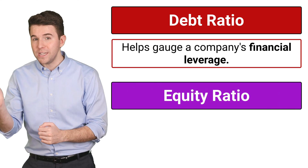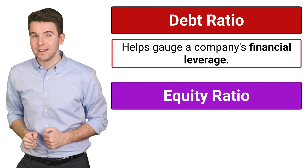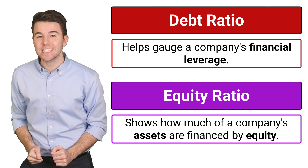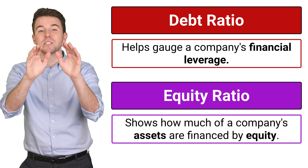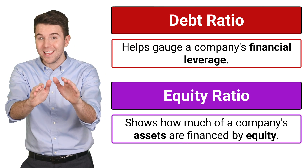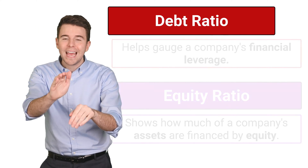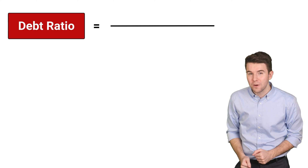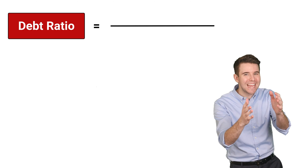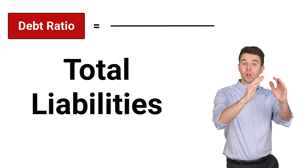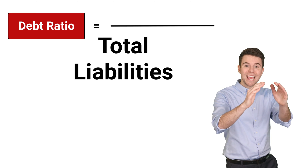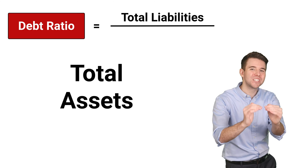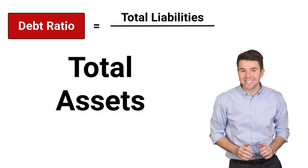The Equity Ratio, on the other hand, tells us how much of a company's assets are financed by equity. To calculate the Debt Ratio, we take the company's total liabilities and divide them by total assets.